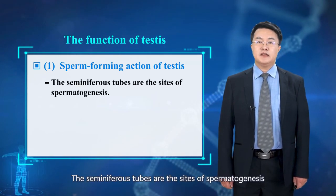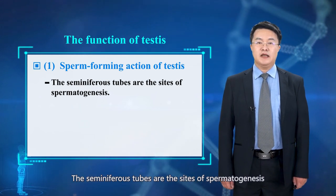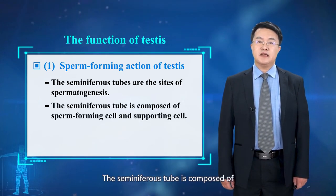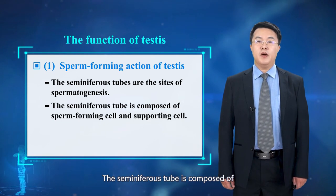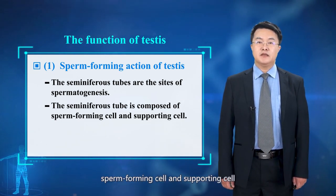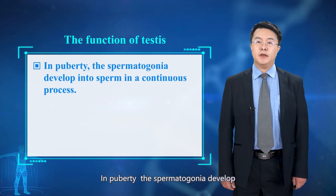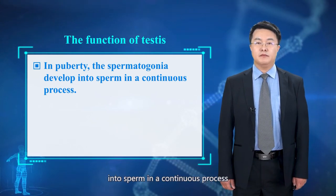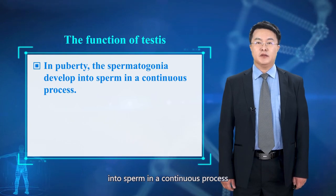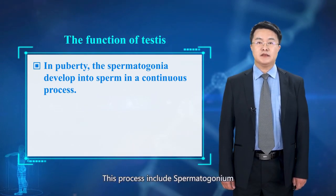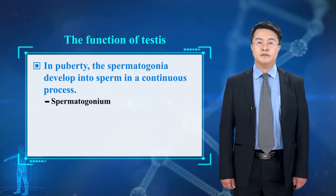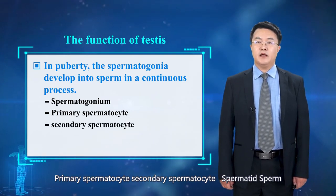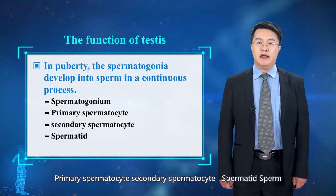The seminiferous tubule is the site of spermatogenesis. It is composed of sperm-forming cells and supporting cells. In puberty, the spermatogonia develop into sperm in a continuous process. This process includes: spermatogonia, primary spermatocyte, secondary spermatocyte, spermatid, and sperm.